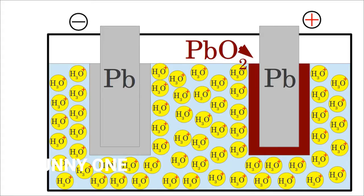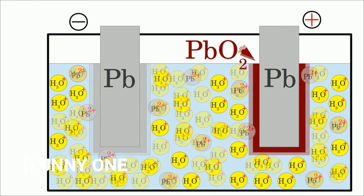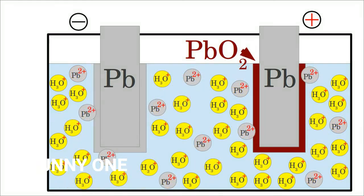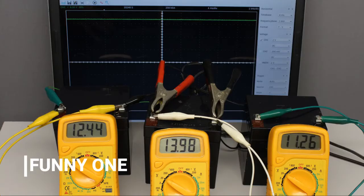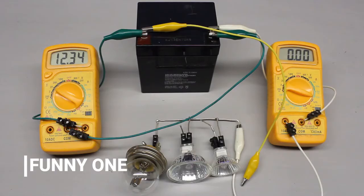The chemical mixture inside of the battery is altering during the charging respectively discharging procedure. The potential is between the end of charge voltage, which is 14 volts, and the end of discharge voltage, which is 11.2 volts.